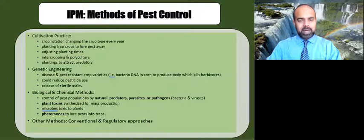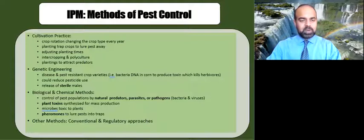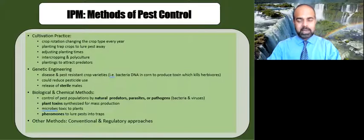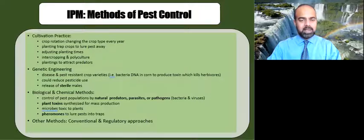Besides cultivation practices, physical methods can also be applied. These prevent pest access to a host or area, or physically remove pests that are already present. Examples include using barriers, traps, vacuuming, mowing, or tillage, depending on the pest and situation.